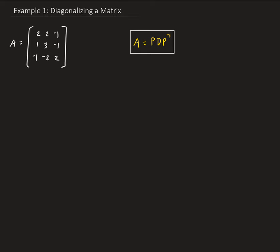The first thing we need to do is find the eigenvalues, because those are going to make up the main entries for the matrix D. So step one is to find the eigenvalues of A.